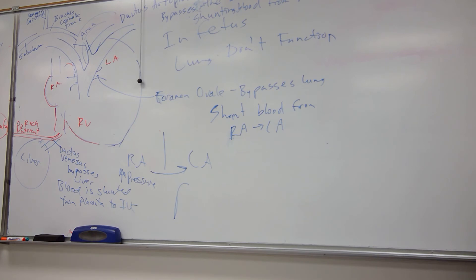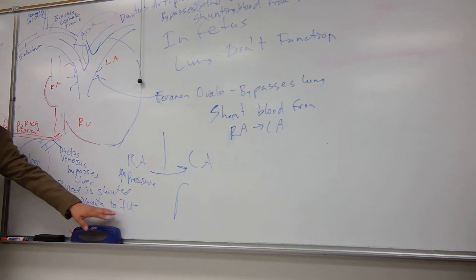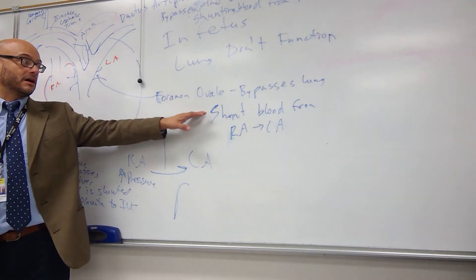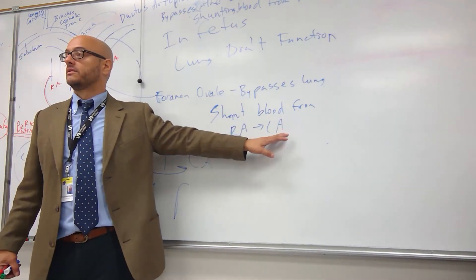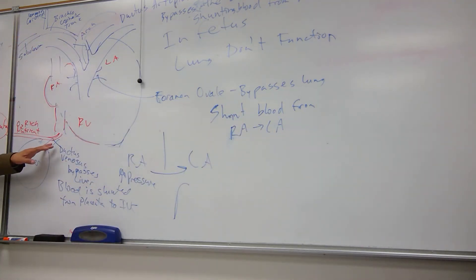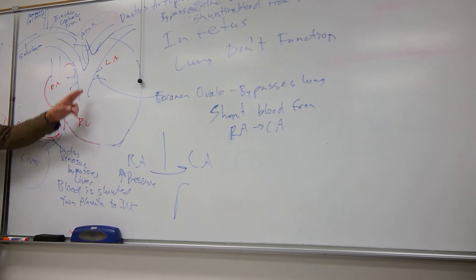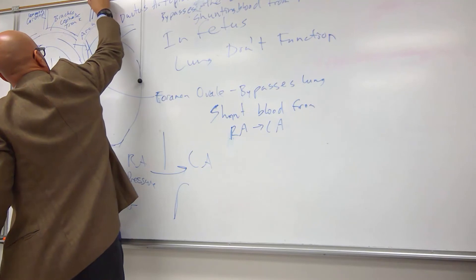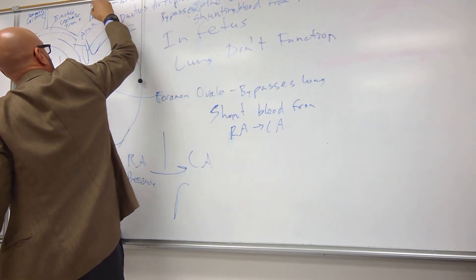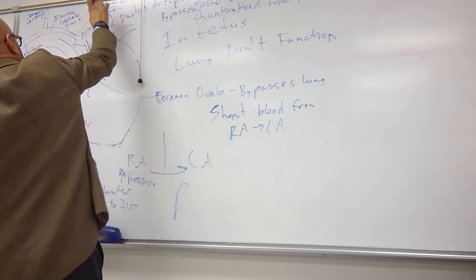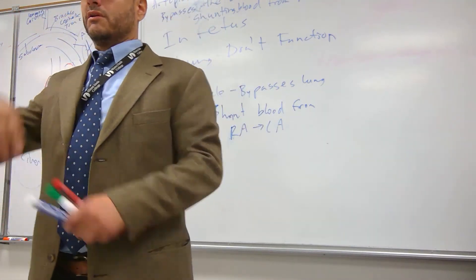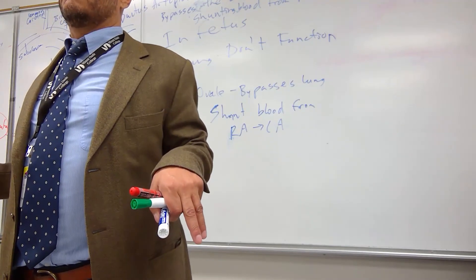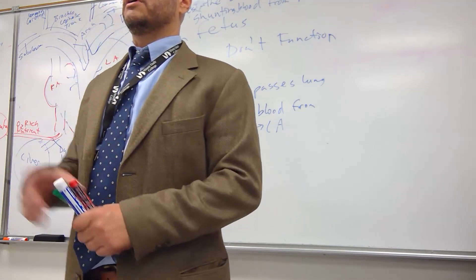So there are three bypasses in fetal circulation: the ductus venosus bypasses the liver; the foramen ovale bypasses the lungs by shunting right atrium to left atrium; and the ductus arteriosus bypasses the lungs by shunting from the pulmonary trunk to the aortic arch. Off the arch are the brachiocephalic trunk, the left common carotid, and left subclavian. The descending aorta becomes the thoracic aorta, then abdominal aorta, and splits into the common iliac arteries.